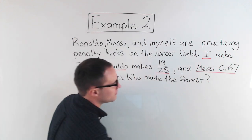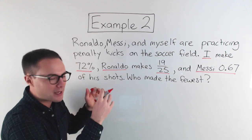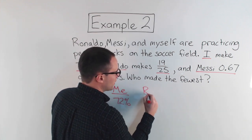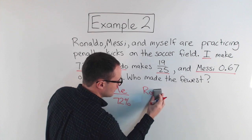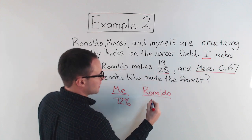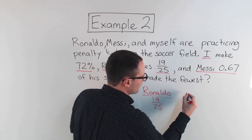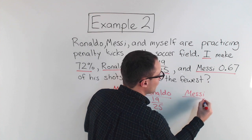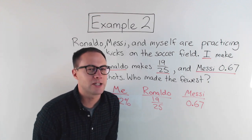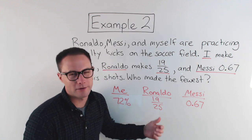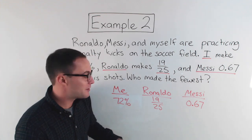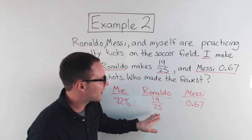To stay organized, I'll make a little table: me with seventy-two percent, Ronaldo with nineteen out of twenty-five, and Messi with zero point six seven. The rule: we've got to make them all the same. We can make them all percents, all fractions, or all decimals. Fractions are usually the toughest, so let's decide between percents or decimals — let's go with percents.